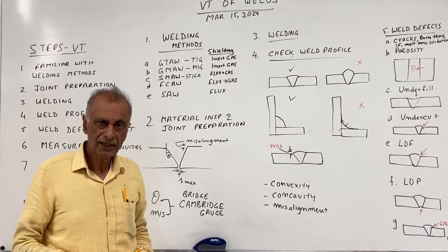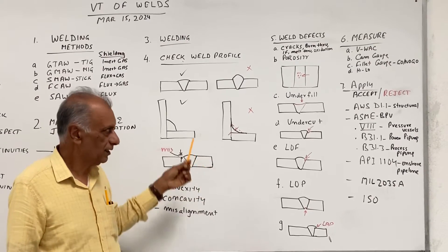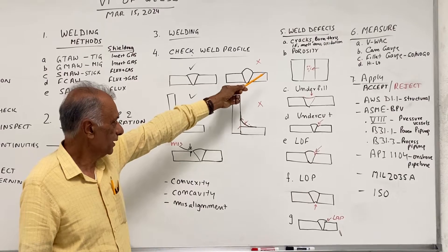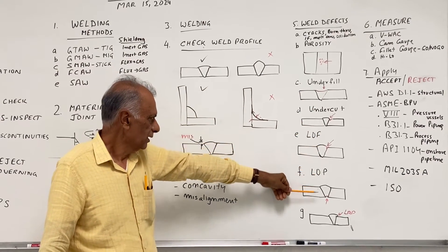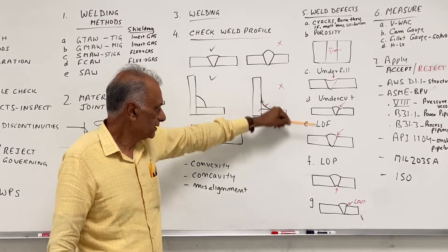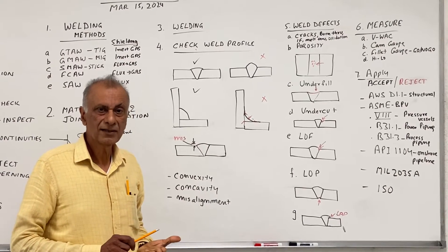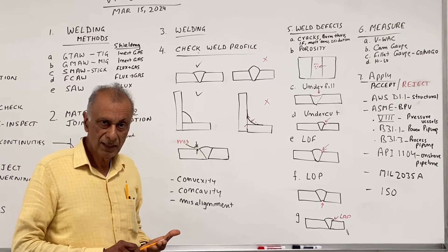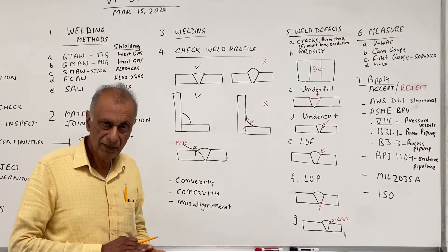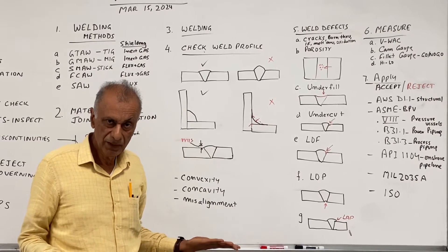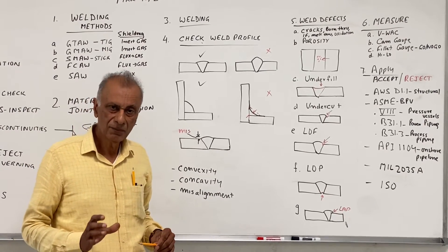Then we start looking for welding discontinuities. There is a list of discontinuities we can expect in the weld: crack, burn through, incomplete fusion, melt through, oxidation, porosity, underfill, undercut, lack of fusion, lack of penetration, and lap. Our job as a VT inspector is first to identify the defects, but that does not mean it is an automatic reject. Once we identify the defect correctly, we refer to the code, and the code will tell us what is a straight-away reject — which we don't have to measure, like cracks or maybe incomplete fusion — and then those which we have to measure and apply the acceptance criteria to.